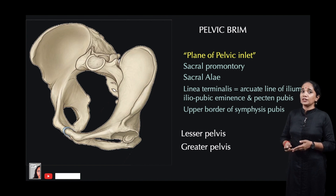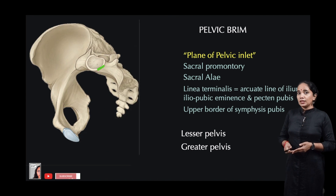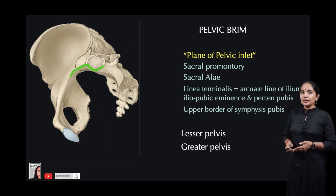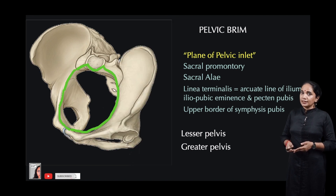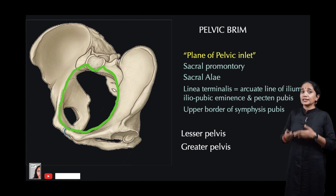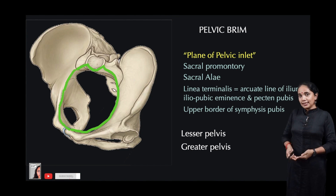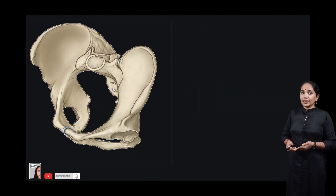Let's look at it from another view. This is the pelvis from the oblique view; let's remove one half so we can take a look at the pelvic brim. There you have the sacral promontory, the sacral ala, the linea terminalis, and the upper border of the symphysis pubis joining with the complete arc on the other side — forming the complete pelvic brim, which is the boundary between the greater pelvis above and the lesser pelvis below.